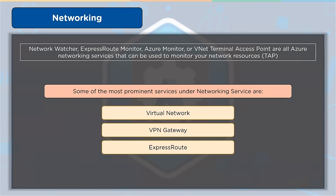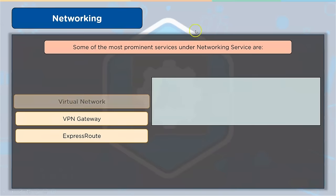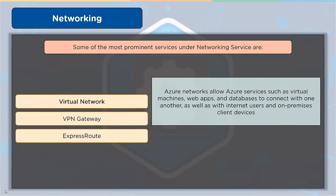Azure Virtual Networks allow Azure services such as virtual machines, web apps, and databases to connect with one another, with internet users, and with on-premises client computers. An Azure network is a collection of resources that connects other Azure resources, providing isolation and segmentation, internet communications, communication among Azure resources, communication with on-premises resources, route network traffic, filter network traffic, and the ability to connect virtual networks.